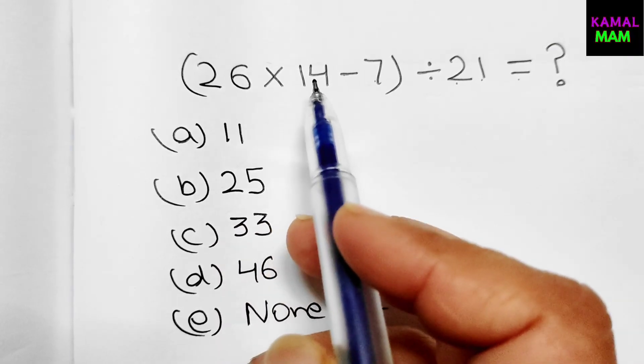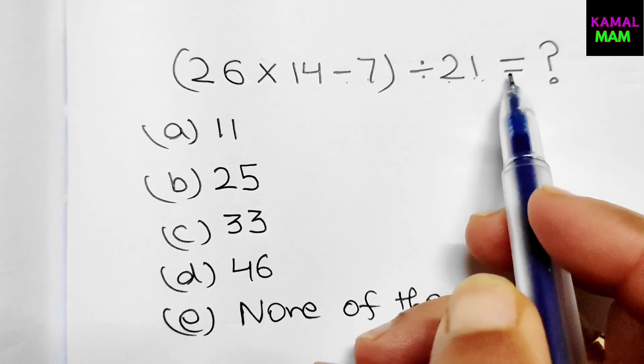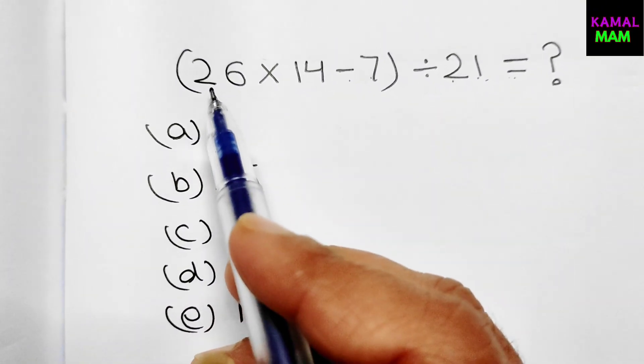26 multiplied by 14 minus 7, divided by 21 equals what? So firstly solve this one according to the rule of BODMAS.